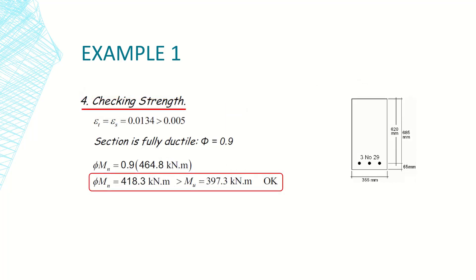To select the appropriate φ, I verify that ε_s = 0.0134 > 0.005, confirming a tension-controlled section. Therefore φ = 0.9. The design capacity is φM_n = 0.9 × 464.8 = 418.3 kN·m, which is greater than the applied moment of 397.3 kN·m — the design is acceptable and economical, with no huge difference between the two values.